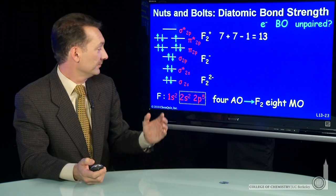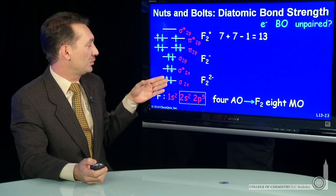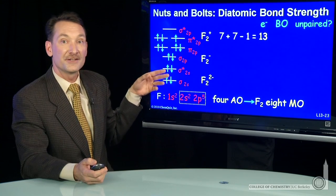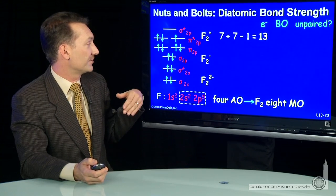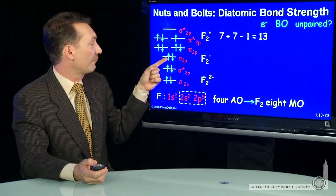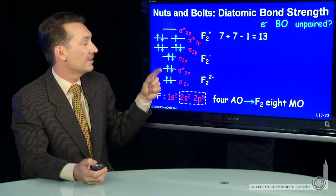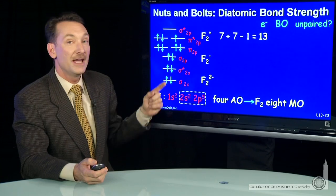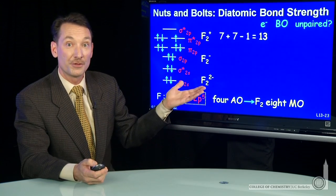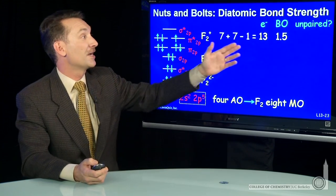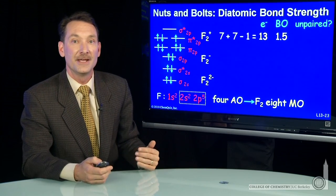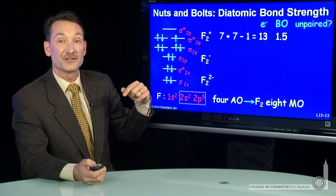What's the bond order? Well, the sigma 2s and the sigma star 2s, those cancel each other out. That gives 0 bond order. And then I have six bonding electrons minus three antibonding electrons, so 3 total, divided by 2, 1 and 1 half. Is it paramagnetic? Yes, there's an unpaired electron.